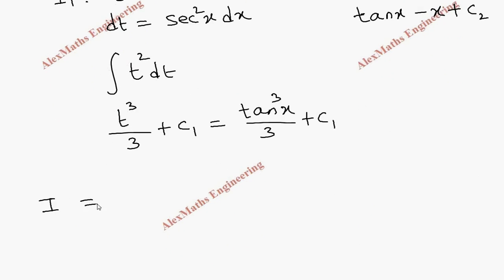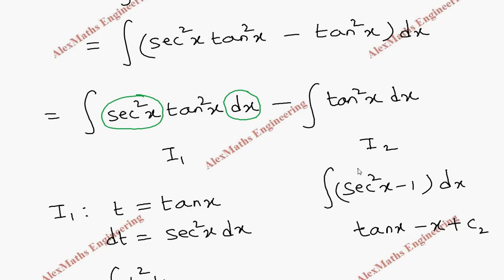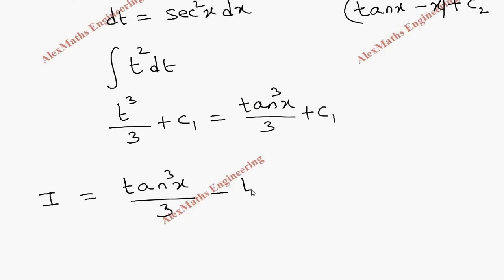So we have to combine both the answers. So I is I1 minus I2, and I1 is tan cubed x by 3. Then minus - we have two terms here. So when we take minus for both, the first term will become minus tan x, then plus x, plus c1 and c2 combined together as constant c.